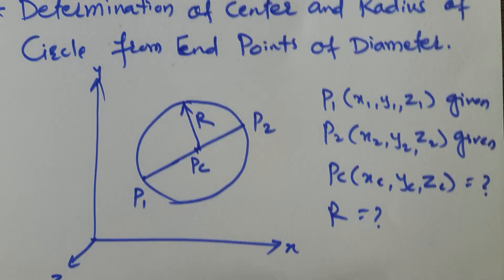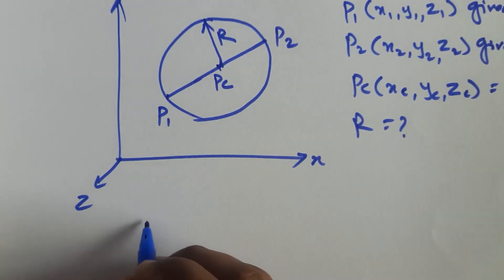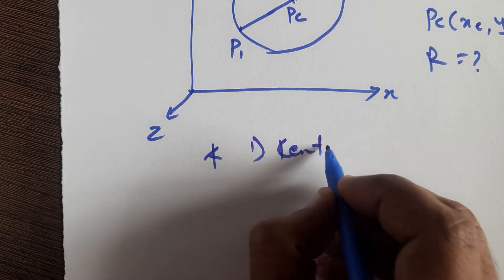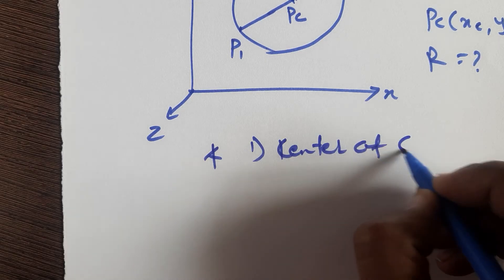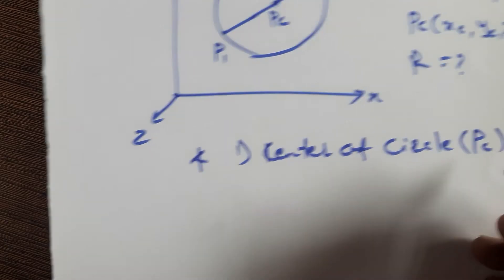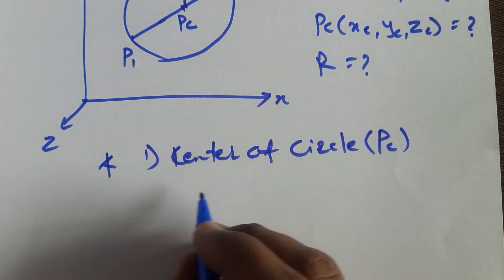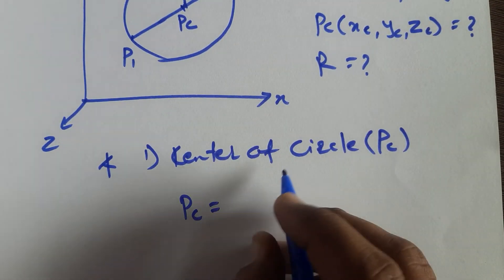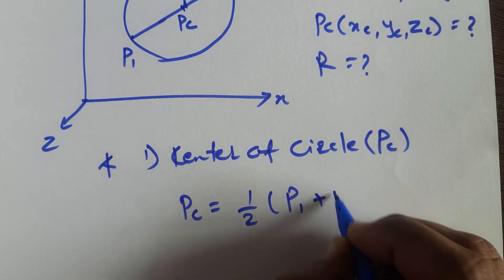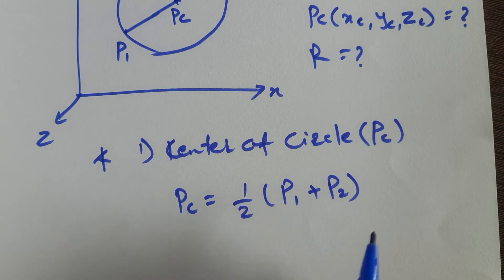So in this case, if you want to find the center of the circle, Pc, you can use this formula: Pc is equal to half of P1 plus P2. So from this formula you can find Pc.